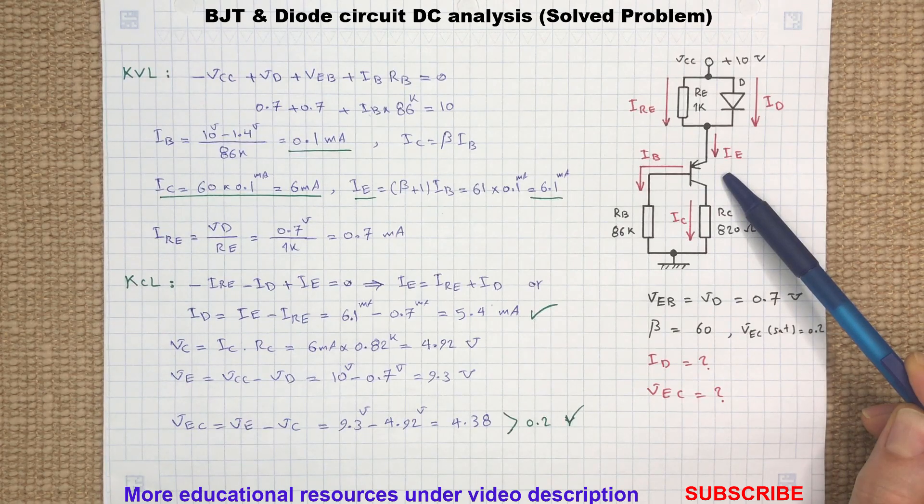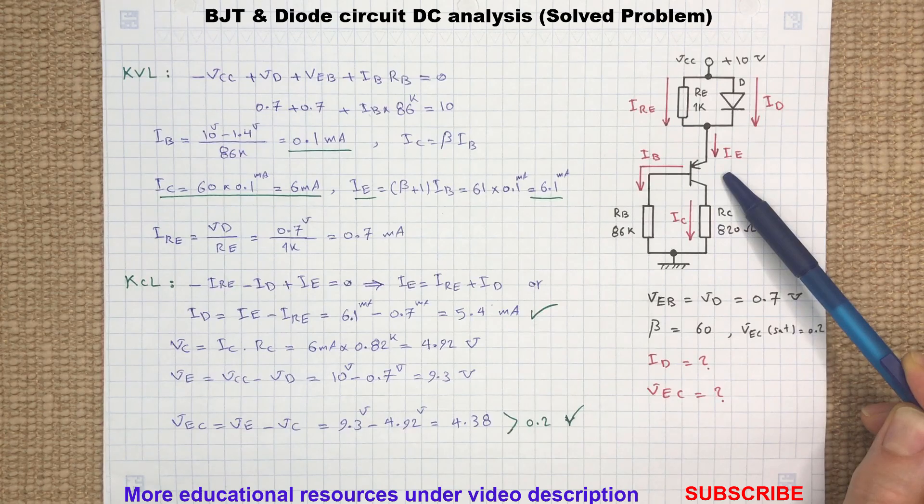To determine the emitter-collector voltage, first we need to find the voltage at the emitter and collector terminals with respect to the common ground.